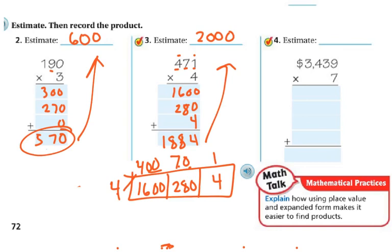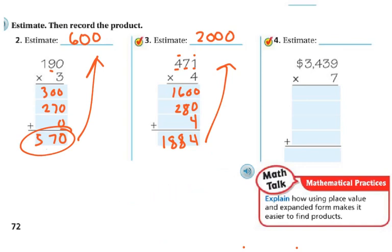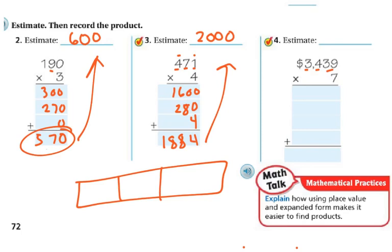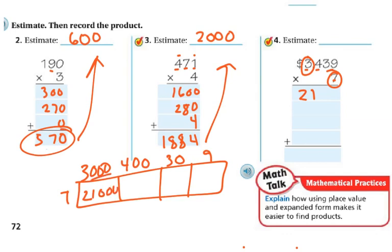Lastly, we have 3,439. I'm going to stick with my bar model because I know a lot of you in my class are really visual. This has four place values, so I'm going to break my bar into 4 parts. I'm going to be doing 7 times the 3,000, so here's my 3,000; then my 400; then in my tens I have 3, so that's 30; and then in my ones I have 9. So 7 times 3,000 — 7 times 3 is 21, and I'm going to add my three zeros. Then 7 times 400 — 7 times 4 is 28, and then I add my two zeros, so I've got 2,800. Make sure you're lining these up so it doesn't get too sloppy.